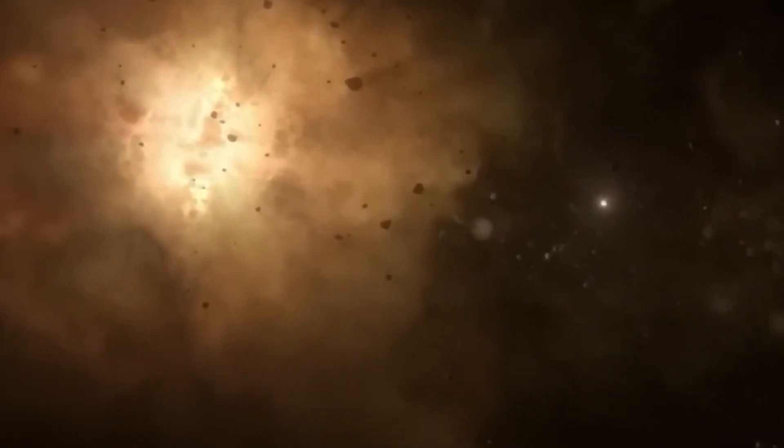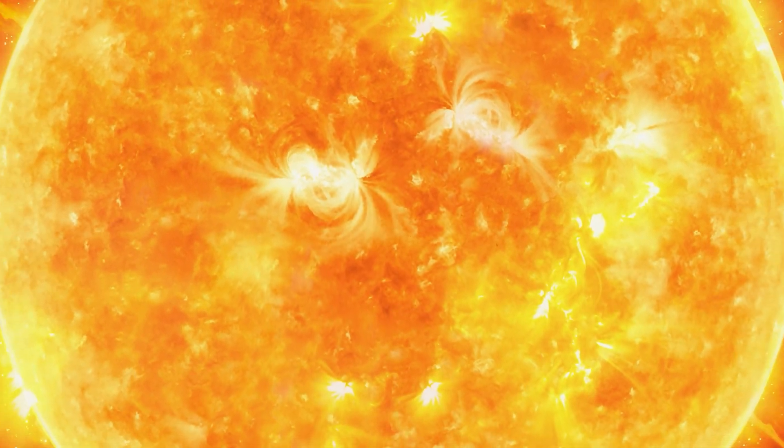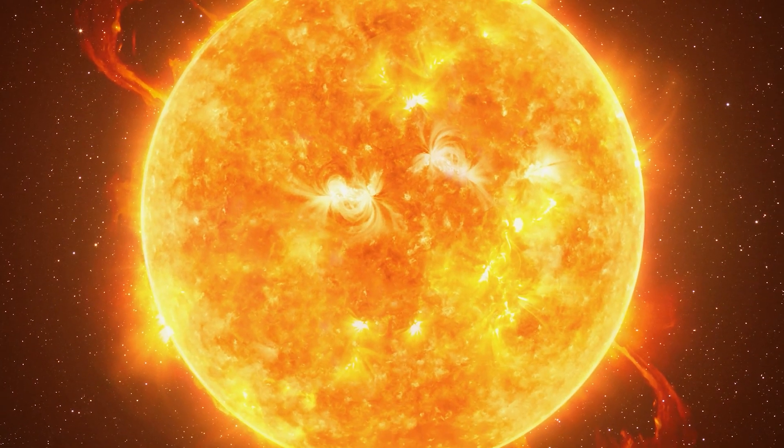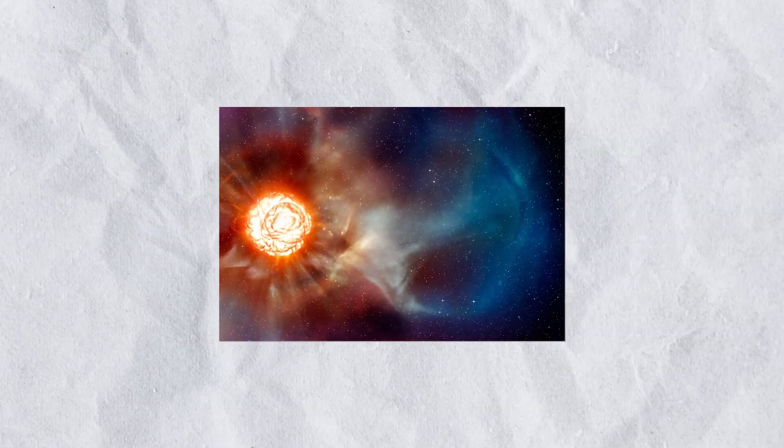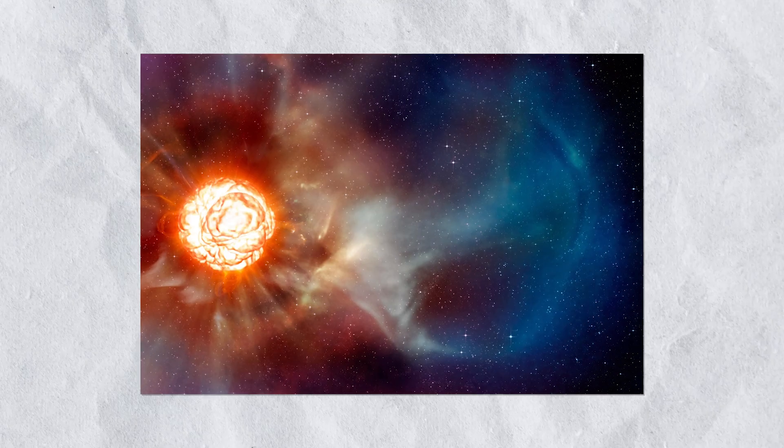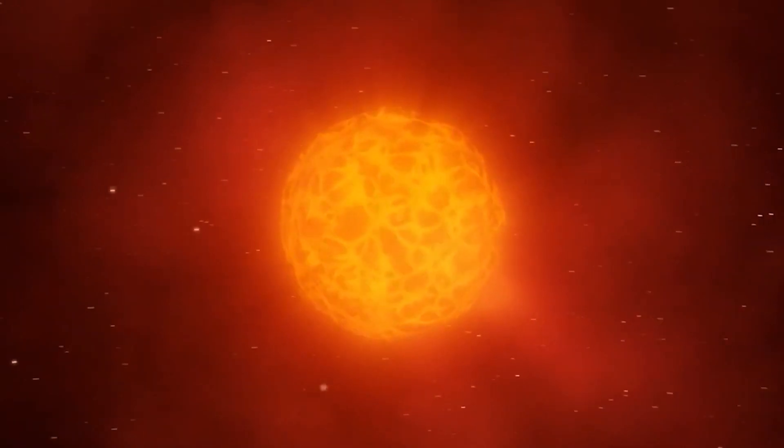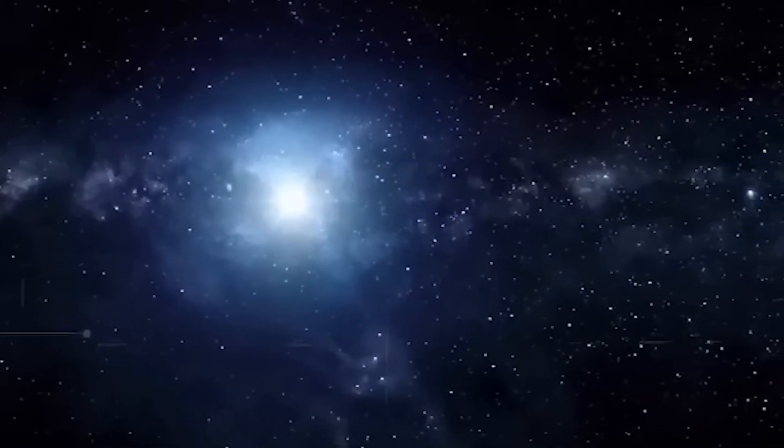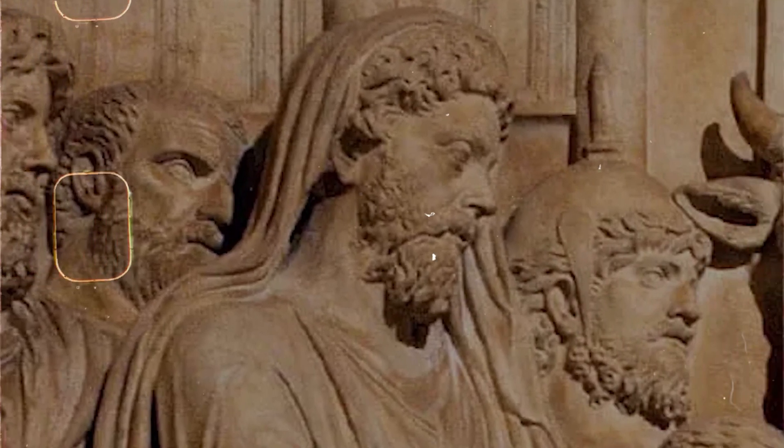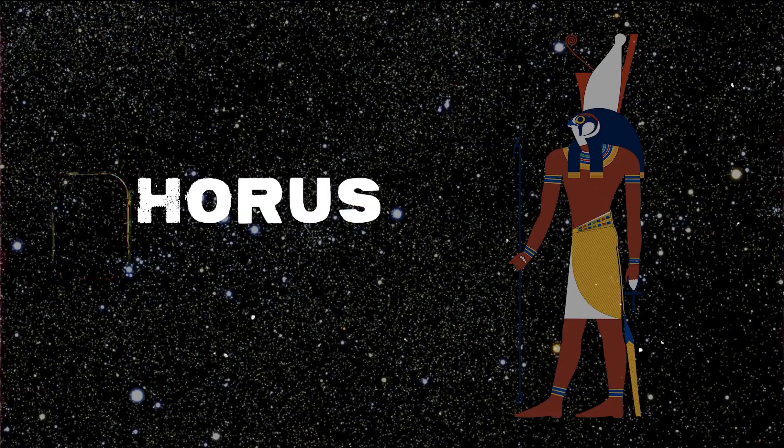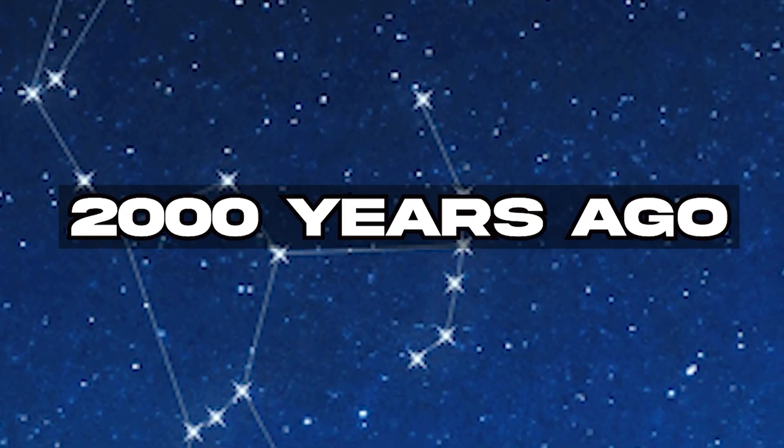Even if you're not familiar with its name, chances are you've beheld the awe-inspiring Betelgeuse. This radiant reddish dot commands our attention, positioned proudly at the shoulder of the legendary Orion constellation. Betelgeuse has captured the fascination of humans for millennia. Its presence has intrigued civilizations throughout history, including the ancient Romans. The poet Horace referred to it as Orion's star with a troubled glare over 2,000 years ago.